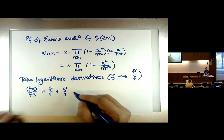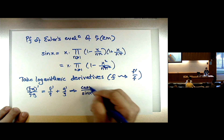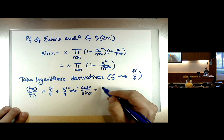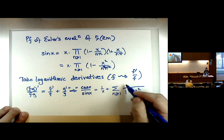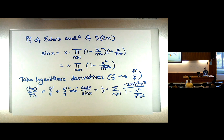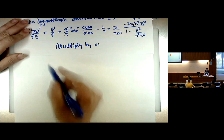If you extend this to infinitely many terms — if you do the logarithmic derivative of sine, you get cos(x)/sin(x) = 1/x plus the sum over n of the derivative of (1 − x²/n²π²), which is −2x/n²π². So what I'd like to do is multiply by x, and what's going to happen is we're going to get x·cos(x)/sin(x) = 1 − 2·∑_n x²/(n²π²) · 1/(1 − x²/n²π²).